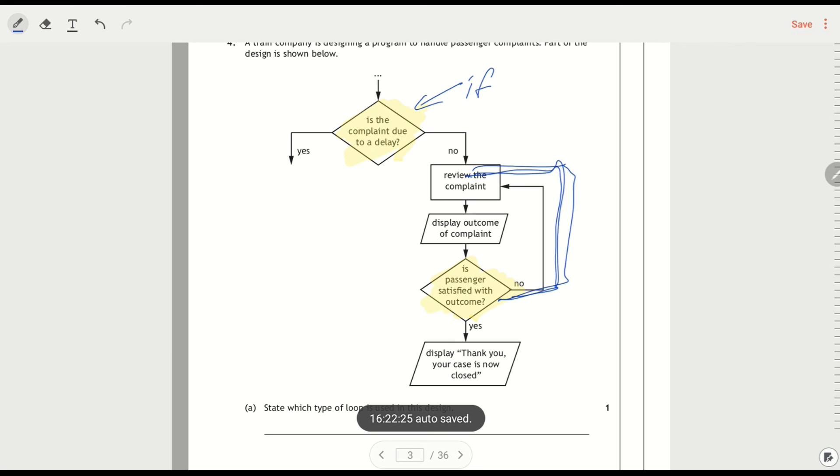Now, if this was a fixed loop, it might be something like, repeat 10 times, ask if the passenger is satisfied, but that doesn't really make any sense. So instead, it's a conditional loop. Because you don't know in advance how many times that the passenger isn't going to be satisfied with the complaint, so you just need to keep repeating until it's right.